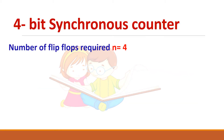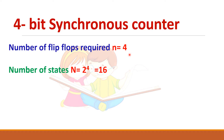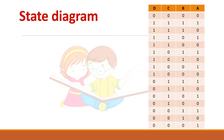For a 4-bit counter, we need 4 flip-flops. The number of states will be 2 to the power 4, equal to 16, so totally 16 states will be there. You can see here A, B, C, D — 4 flip-flops I have taken, and there are 16 states.